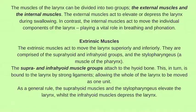Laryngeal muscles: the muscles of the larynx can be divided into two groups — the external muscles and the internal muscles. The external muscles act to elevate or depress the larynx during swallowing, while the internal muscles act to move the individual components of the larynx, playing a vital role in breathing and phonation. The extrinsic muscles move the larynx superiorly and inferiorly; they are comprised of the suprahyoid and infrahyoid groups and the stylopharyngeus. The supra- and infrahyoid muscle groups attach to the hyoid bone, which is bound to the larynx by strong ligaments, allowing the whole larynx to move as one unit. As a general rule, the suprahyoid muscles and the stylopharyngeus elevate the larynx, whilst the infrahyoid muscles depress the larynx.